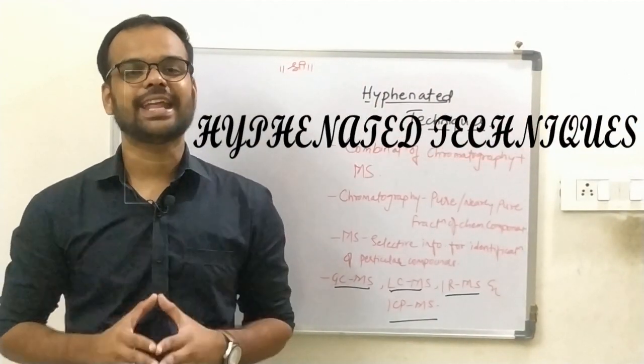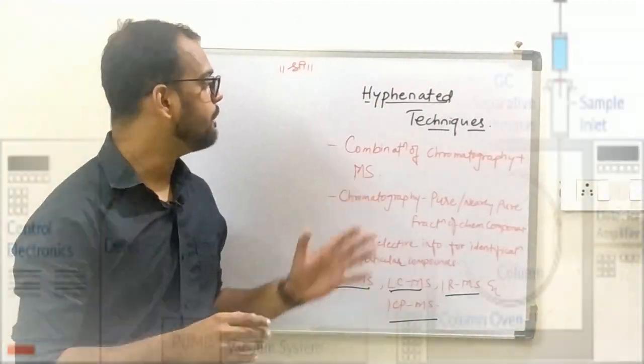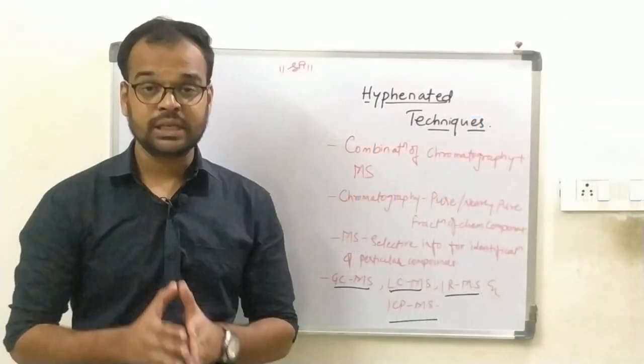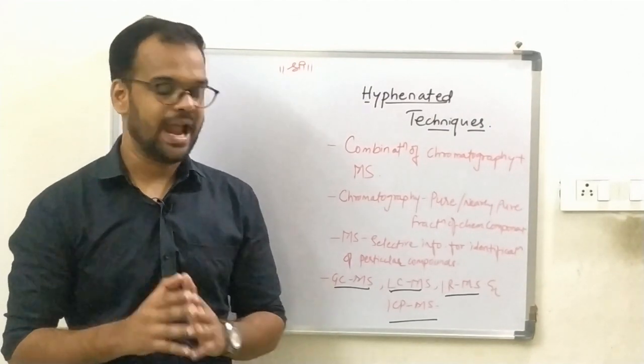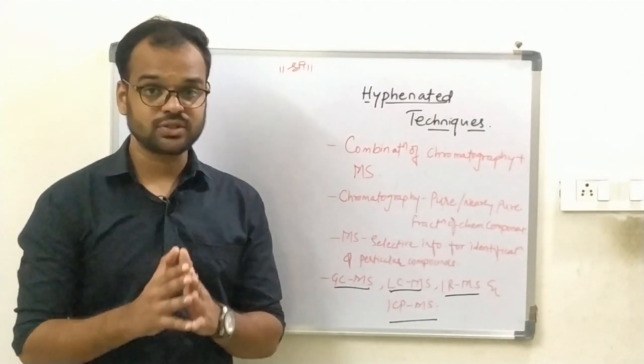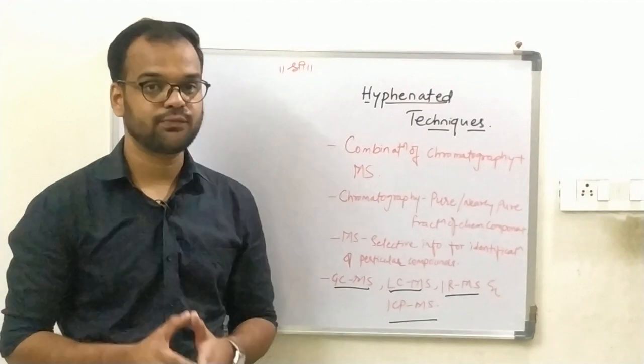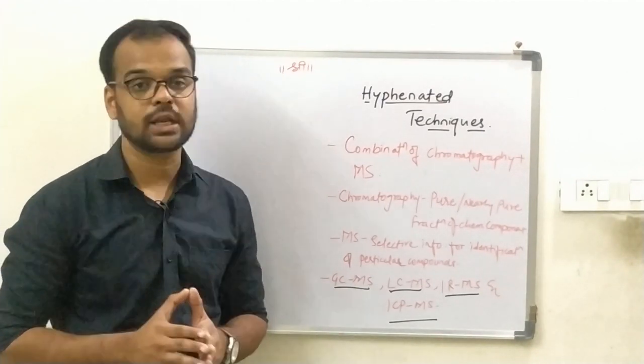Hyphenated techniques. The combination of chromatographic techniques and mass spectroscopy is called as hyphenated techniques. Chromatography produces pure or nearly pure fraction of chemical component in a mixture and mass spectroscopy produces selective information for the identification of particular compounds.